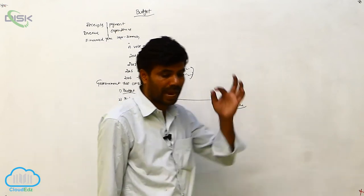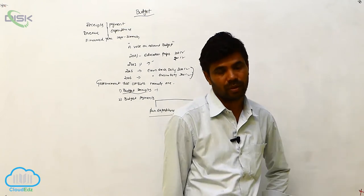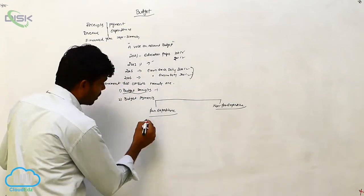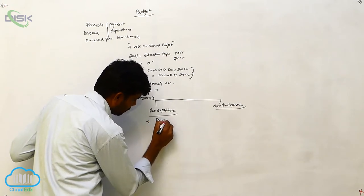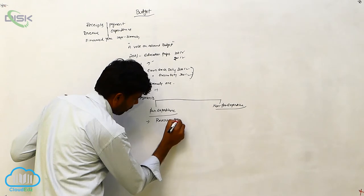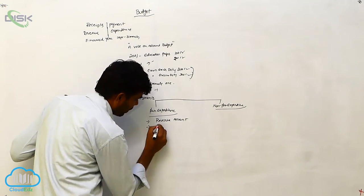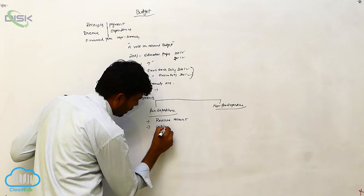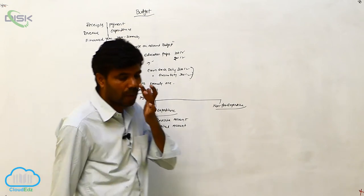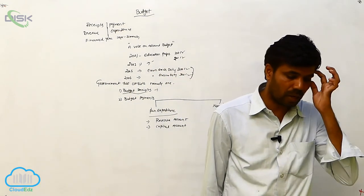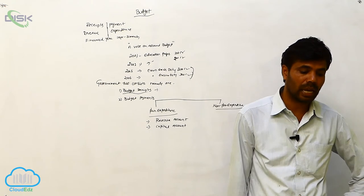What do you mean by plan expenditure? Plan expenditure includes expenditure on revenue account and on capital account — both belong to plan expenditure. Non-plan expenditure also includes a revenue account and a capital account. So both plan and non-plan expenditure consist of revenue accounts and capital accounts.